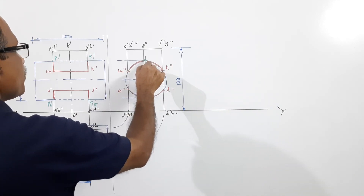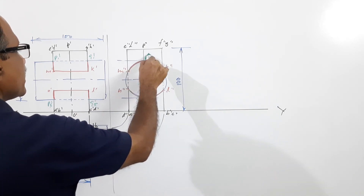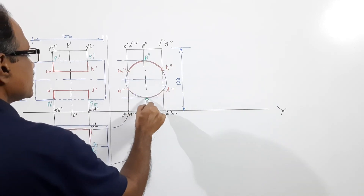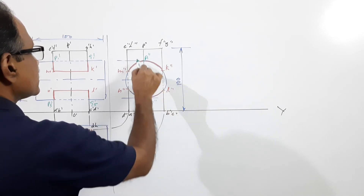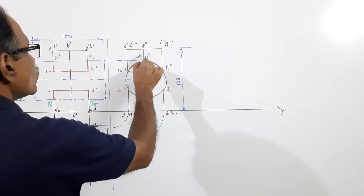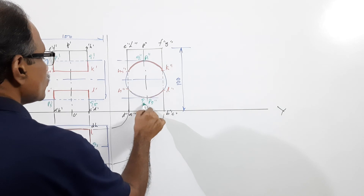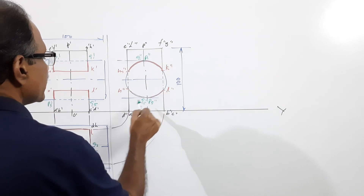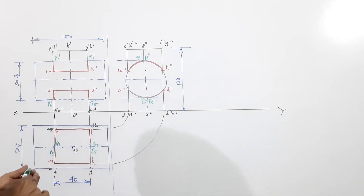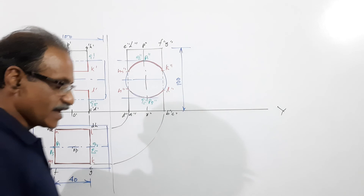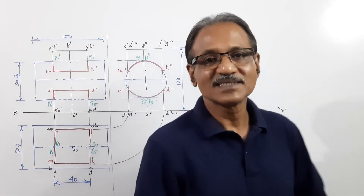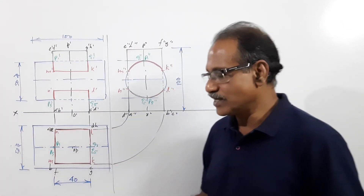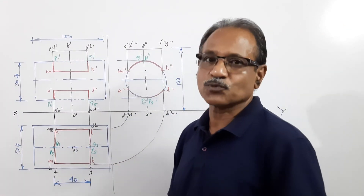If you are very particular, you can mark points as p1, p5, q1, and q5, so that in the elevation you have p1 dash, p5 dash, q1 dash, q5 dash, and in the end view p1 double dash, p5 double dash, q1 double dash, q5 double dash — but that labeling is not very necessary.